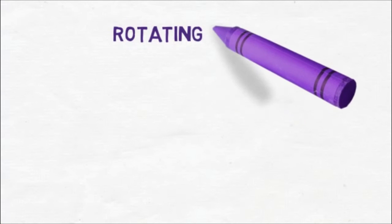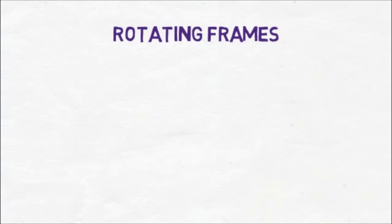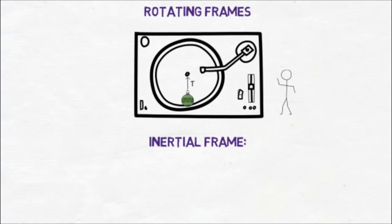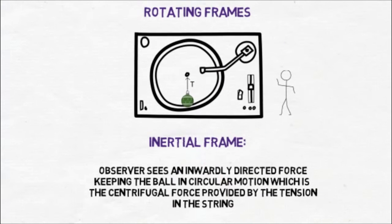We will now take a look at rotating frames. Let's begin with a ball rotating on a frictionless horizontal plane as it is attached to the centre by a string. An observer in the inertial frame sees an inwardly directed force keeping the ball in circular motion which is the centripetal force provided by the tension in the string, which is given by the equation f equals mv squared over r, which we are familiar with.